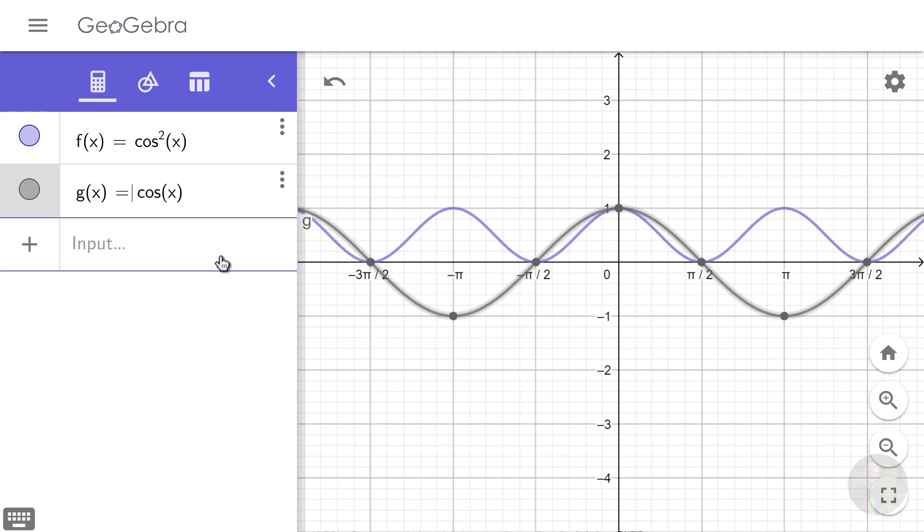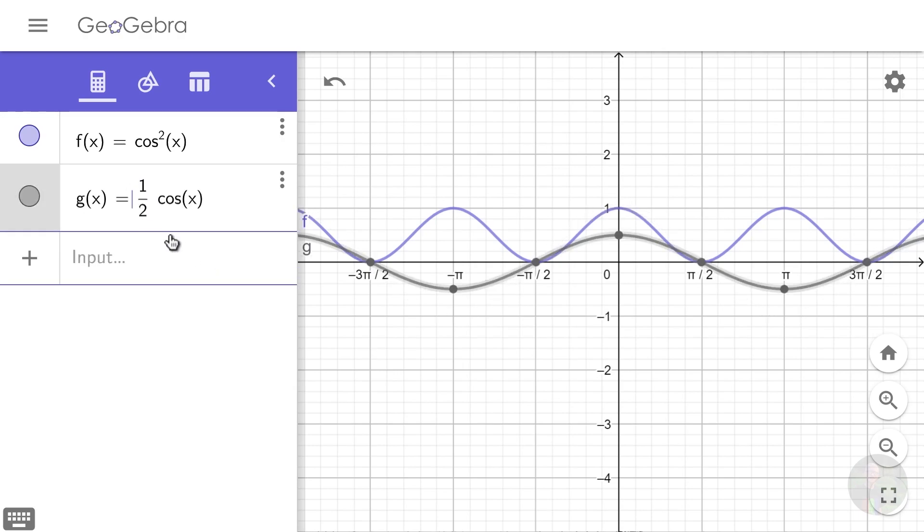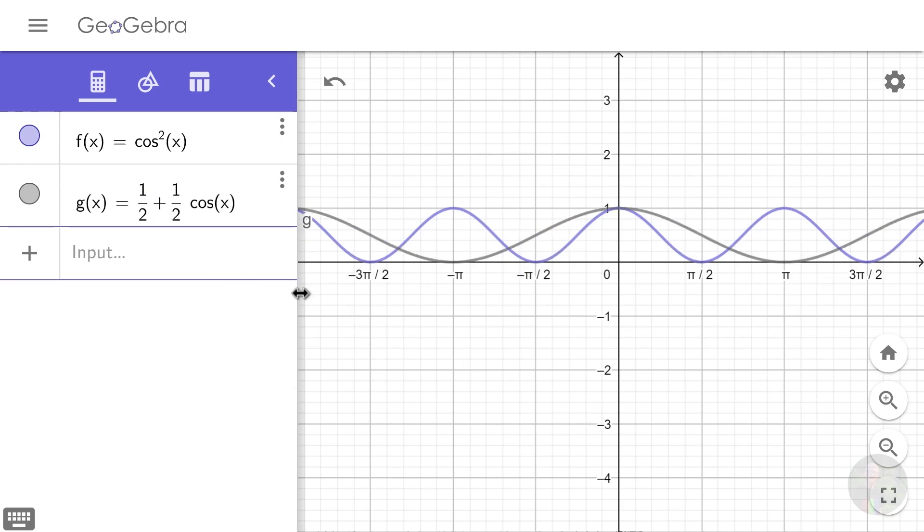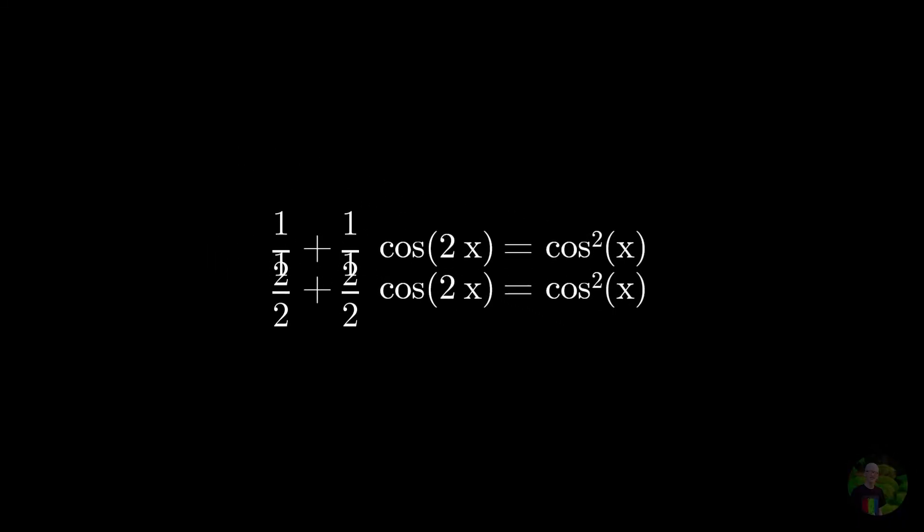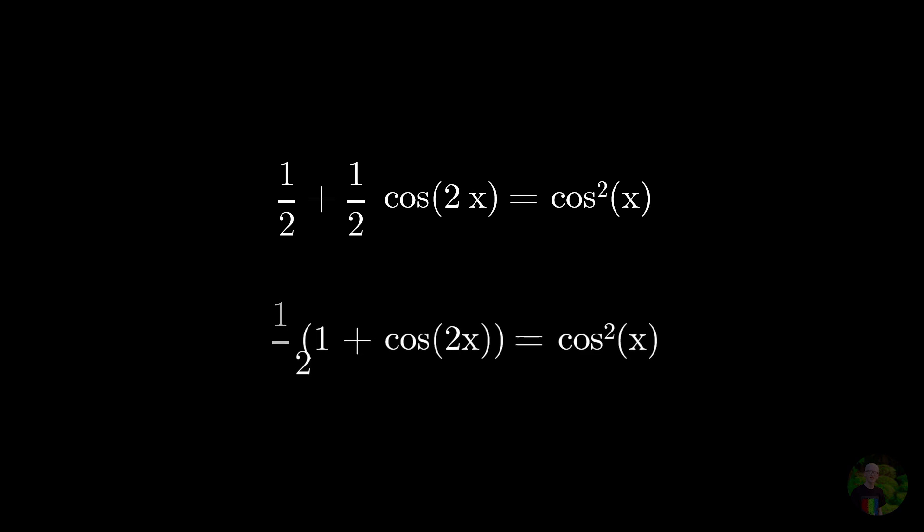First, let's scale down cos x a little bit, and let's try shifting it a little bit upwards. Okay, we are close. It looks a bit diffused, so let's squish it a little bit, and boom! Now these two are identical, and if you have learned this, you might remember it, we just verified one of the double angle formulas.